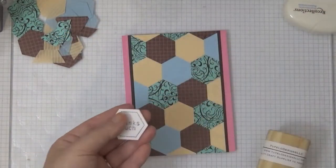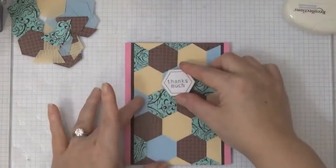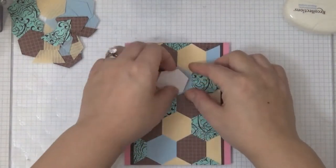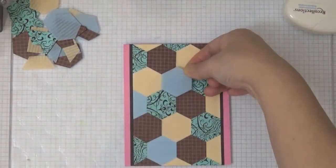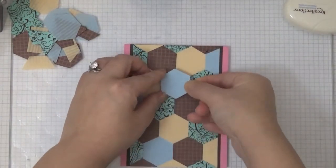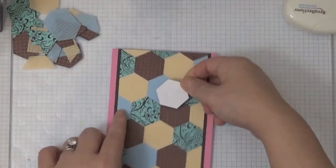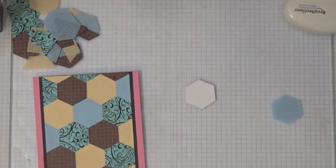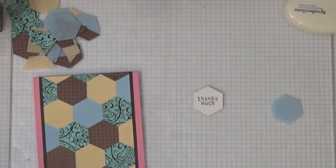This is where I go back and forth with my sentiment. I am going to have my sentiment popped up right there. As you can see I stamped the thanks much in a different way, but I go back and forth to see if I want to use the white cardstock or the vellum. I try a couple different ways with the white and the vellum.